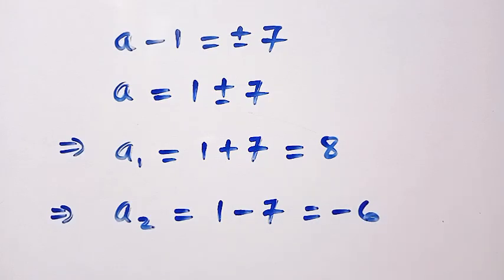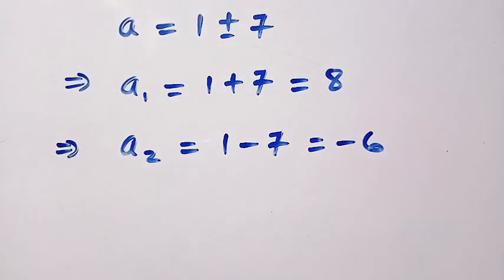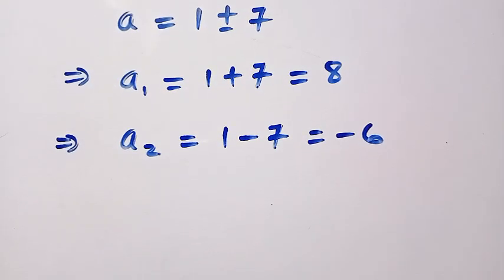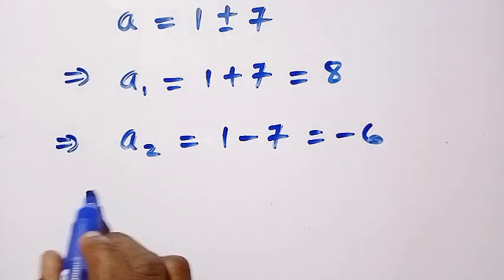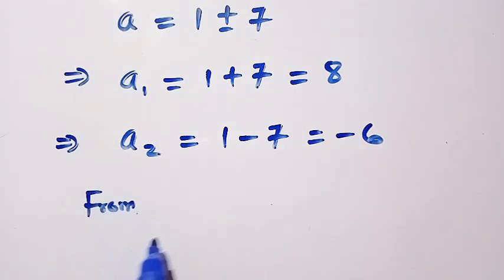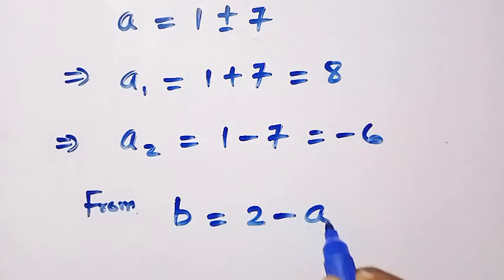We have two values of a which means we must also have two values of b. And let's recall we have b equals 2 minus a.